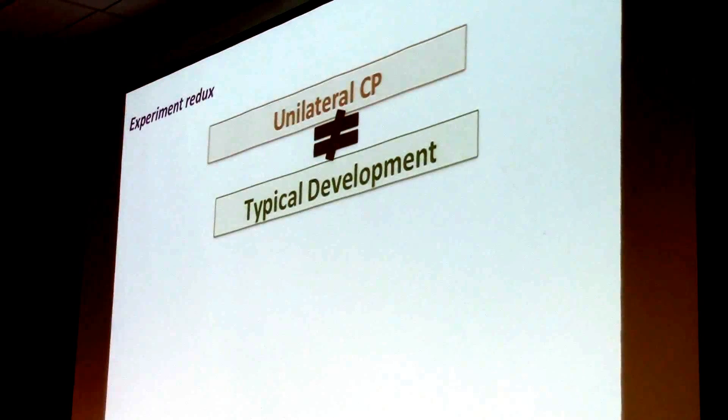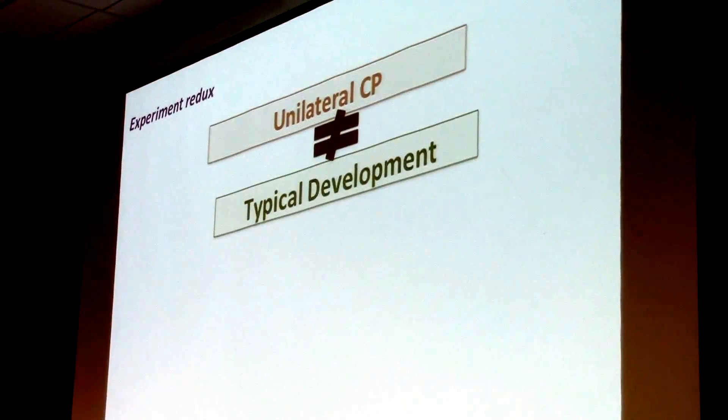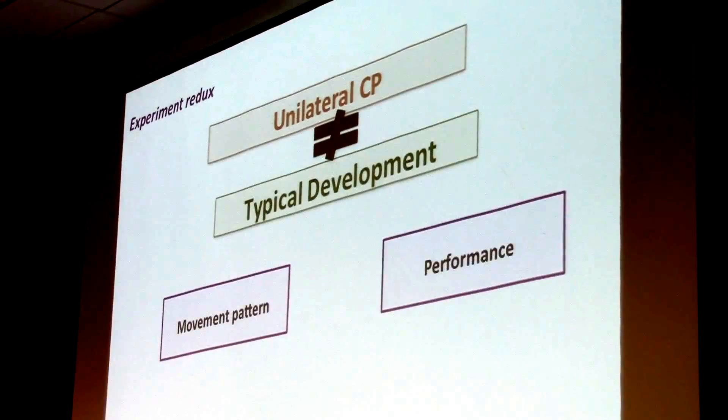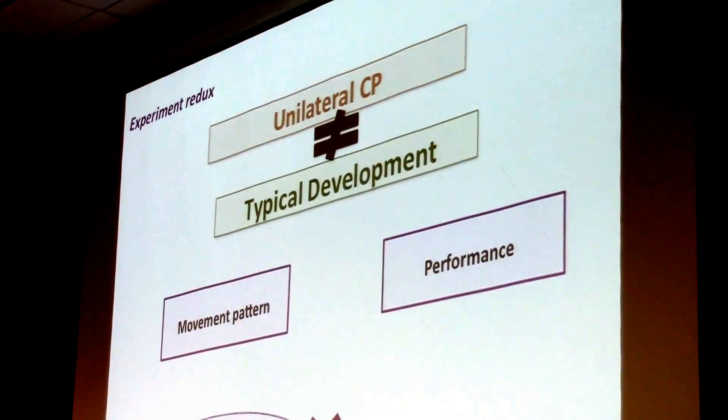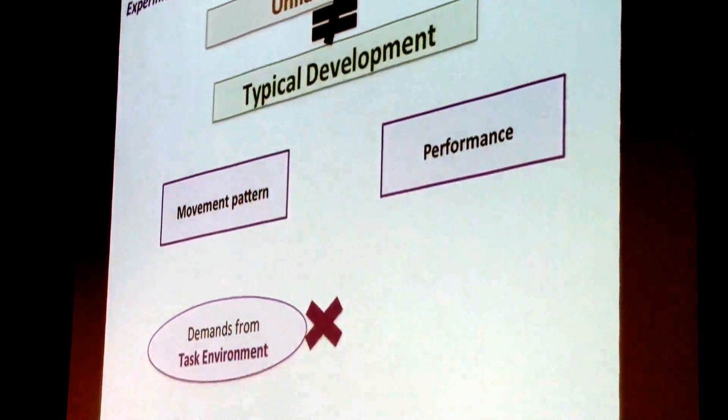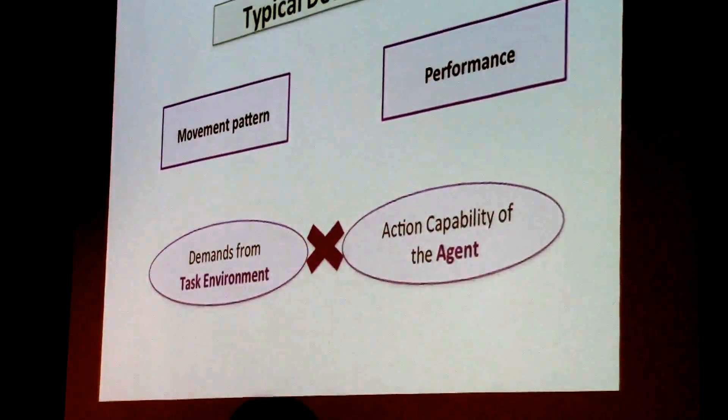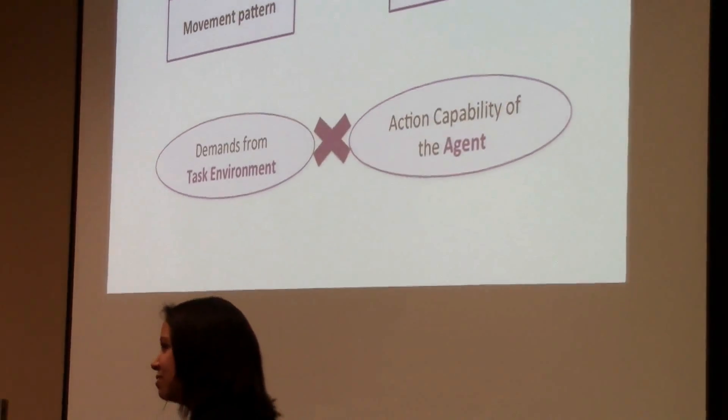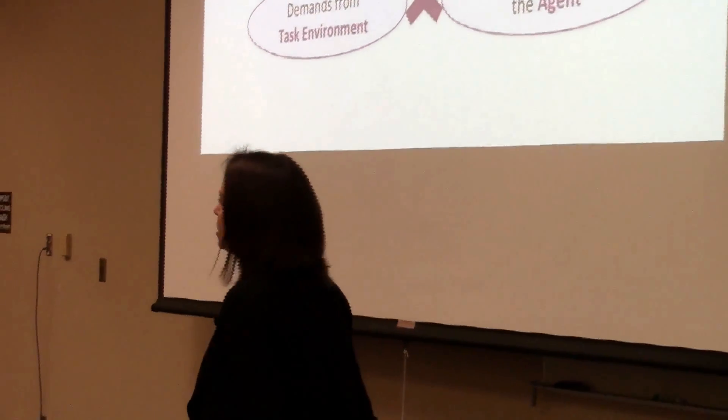So what did we find? We found the differences expected between unilateral children with cerebral palsy and typically developing children. We found that both in movement pattern and performance. Everything everybody found, we found. But we found that these differences are context dependent. They increase as task demands tap into capabilities that are at fault. And we found evidence that movement patterns and performance are complementary rather than the relation being reductive. You don't have one causing the other. You have one supporting and driving the other.